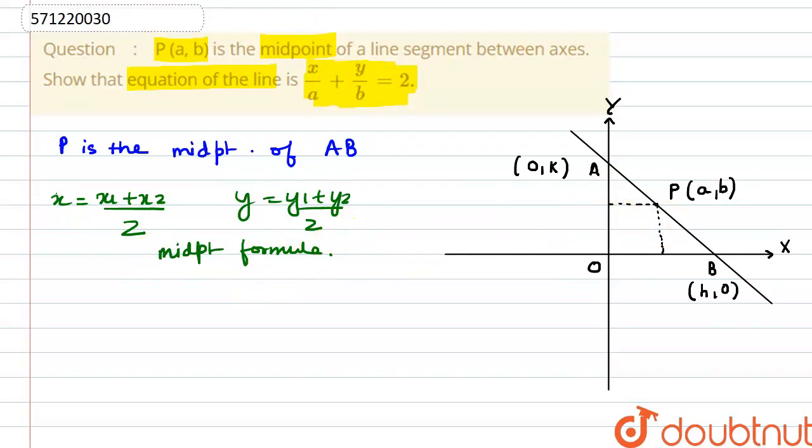So here if we use the midpoint formula, we have the value of P point x coordinate that is a. So a will be equal to h plus 0 by 2 or from here we can write this as h is equal to twice of a.